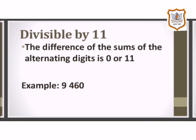The last rule is divisible by 11. If the difference between the sum of the digits at the odd places and the sum of the digits at the even places of a number is either 0 or divisible by 11, then the number is divisible by 11. For example, the number is 9460. The digits at the odd places are 0 and 4; if we add them, we get 4.